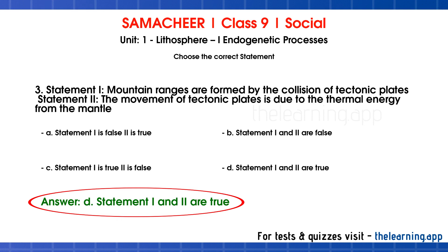When tectonic plates collide with one another, mountain ranges are formed. The plates move due to thermal energy from the mantle. When they collide, the result is mountain ranges. So both statement 1 and statement 2 are true.